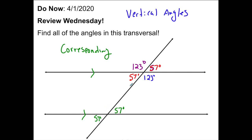These two are what we call alternating because they're on opposite sides, interior angles. So this is 123 degrees. And then again, we have vertical angles, so this is 123 degrees.